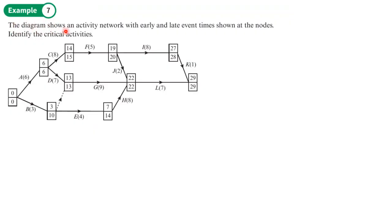Example seven: diagram shows an activity network with early and late event times shown at the nodes, identify the critical activities. So first of all, I'm going to identify the critical events. I will highlight those. So remember, they're the ones where we've got the same number in the bottom and the top box.